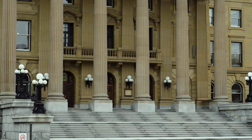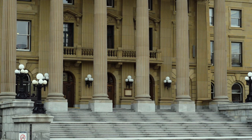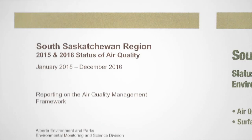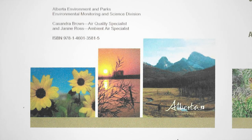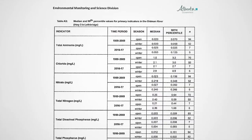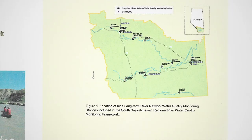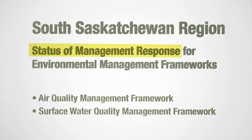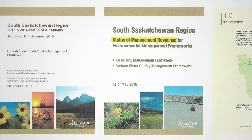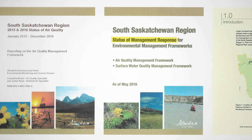Lastly, the government of Alberta has a responsibility to communicate with the public under the frameworks. An annual report on ambient conditions of the environment, including quality and state of the air and water, is published and made publicly available to Albertans online. There are also reports that provide information on the management response if there has been a trigger or limit exceeded, and the investigation and collaborative process as described.